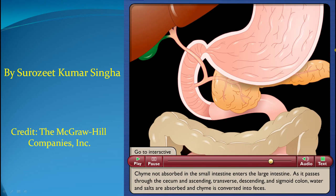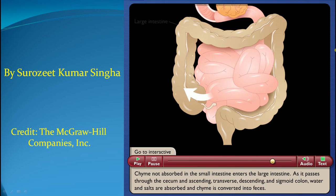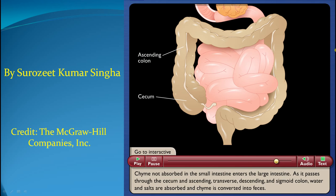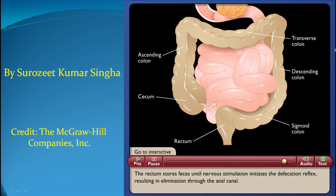Chyme not absorbed in the small intestine enters the large intestine. As it passes through the cecum and ascending, transverse, descending, and sigmoid colon, water and salts are absorbed and chyme is converted into feces. The rectum stores feces until nervous stimulation initiates the defecation reflex, resulting in elimination through the anal canal.